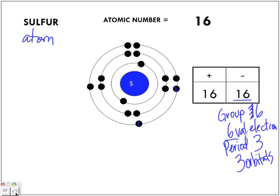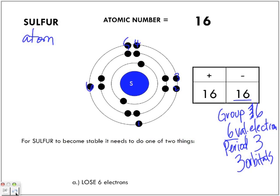We're going to draw our electrons — a total of 16. Two fit in the first shell, eight more on the second, total of ten. Which means I have six more electrons to account for, and they are going to go in the next orbital — those are the six valence electrons on the outermost shell. Now for sulfur to become stable, one of two things can happen: we can either pick up two electrons or get rid of these six.